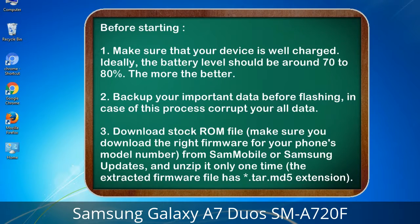Before starting: 1. Make sure that your device is well charged. Ideally, the battery level should be around 70 to 80 percent — the more the better. 2. Back up your important data before flashing, in case this process corrupts your data. 3. Download the stock ROM file. Make sure you download the right firmware for your phone's model number.